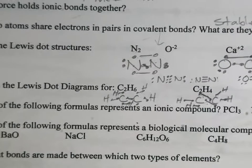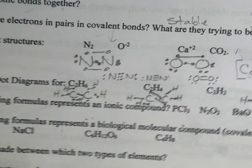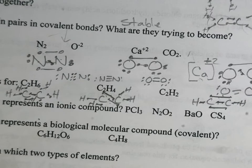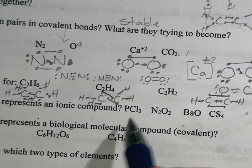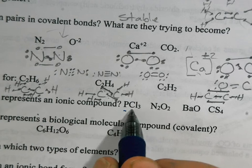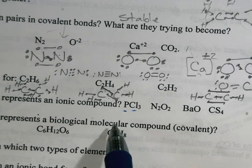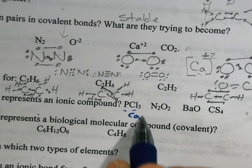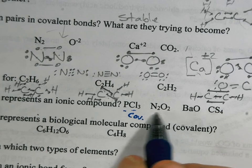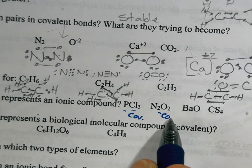Which of the following formulas represents an ionic compound? Well, ionic compounds have a metal with a non-metal. So when you look on your periodic table, both of these are non-metals, so that's going to be covalent. I'm just going to label that as covalent. Nitrogen and oxygen are both non-metals, so that's another covalent.